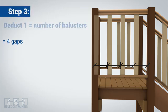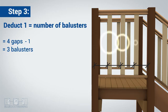Step 3: Deduct one from the number of gaps to calculate the number of balusters. You will have one less baluster than the number of gaps. This will make three balusters.